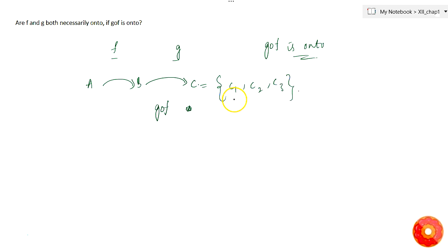Then for every c there is a preimage. That means in a, if g of f needs to be onto, since g of f maps from a to c, it requires a preimage in a for every c1, c2, c3.